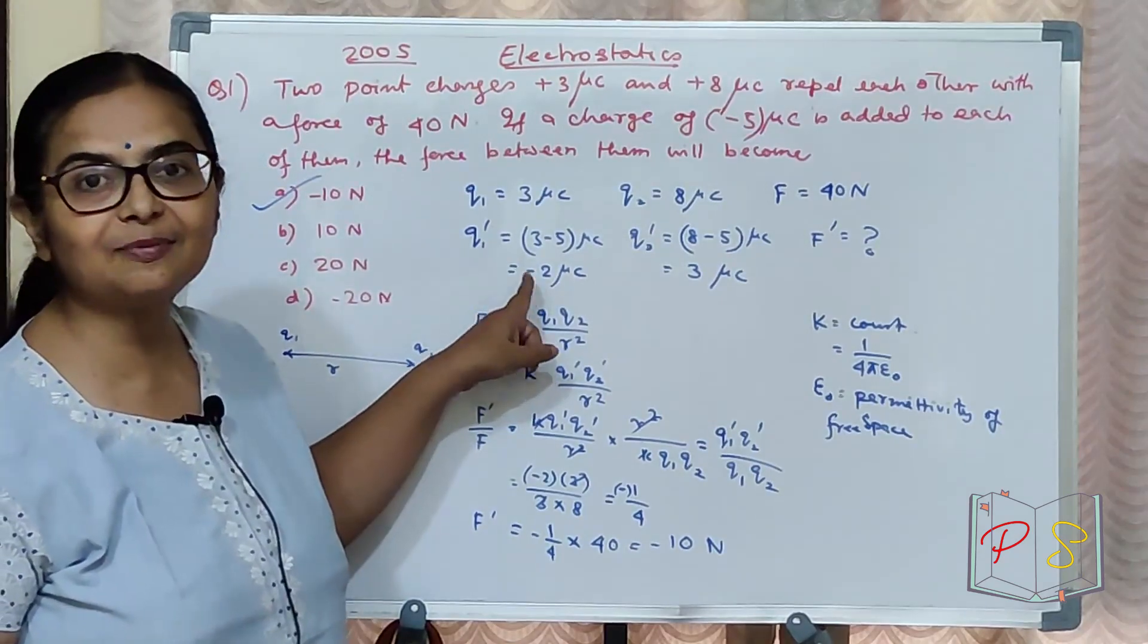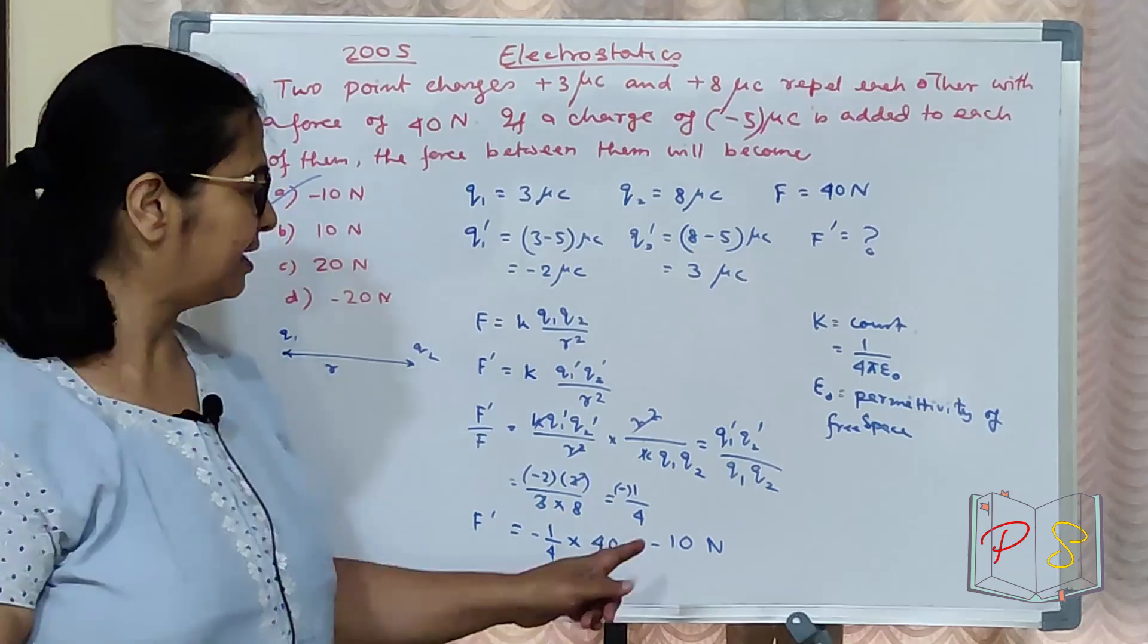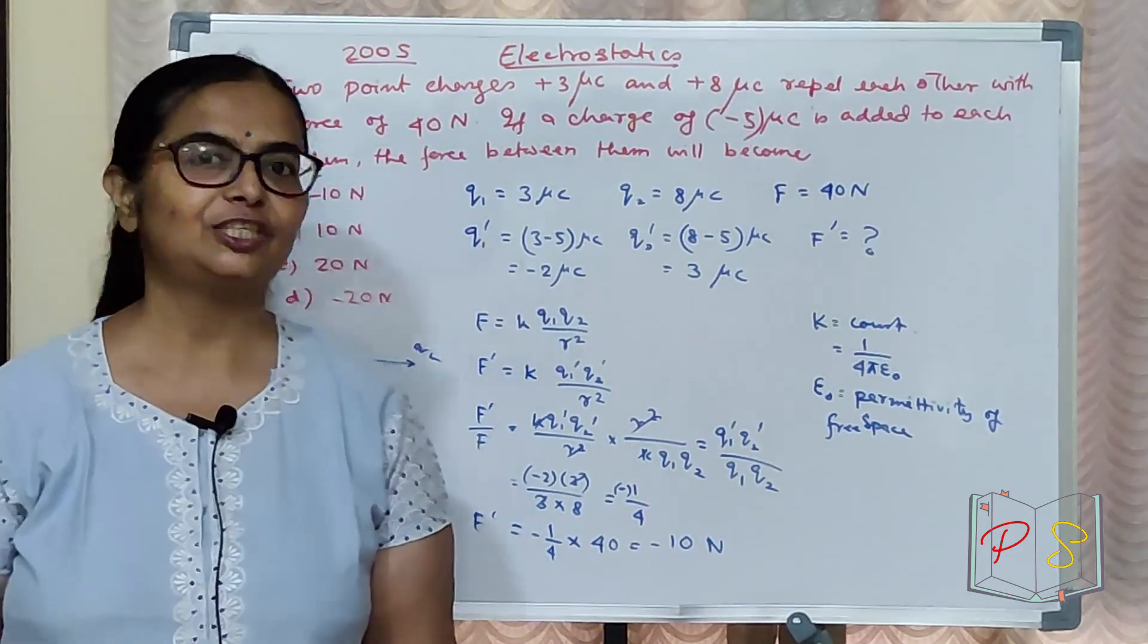This will be an attractive force because here it is minus, here it is plus. Negative and positive will attract. Attractive force will be 10 Newton. Clear? Let's see the next one.